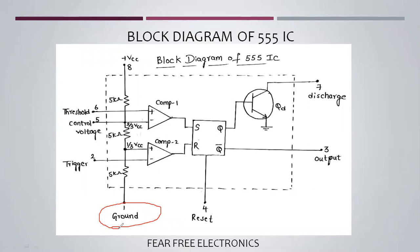The second pin is the Trigger. Trigger is the inverting input (minus input) of comparator 2. The plus terminal voltage of comparator 2 is fixed by the potential divider. Trigger is not connected to the potential divider — it is an external input — but the plus terminal voltage is fixed by the resistor network.